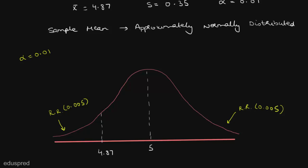Now let us talk about how to calculate the p-value given all this information. Note that we are dealing with a two-tailed test. When dealing with a two-tailed test, the p-value area is the area towards the tail that is closest to the observed sample statistic. In this case, our observed sample mean is closest to the left tail, so the p-value area is that left-tail area. Note that finding the probability of this shaded region alone will not give you the correct p-value — you have to multiply that probability by 2.